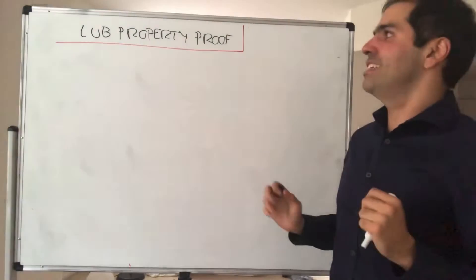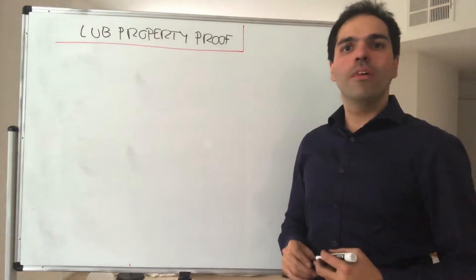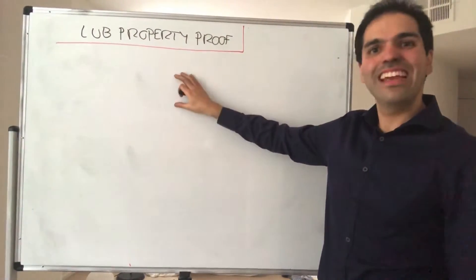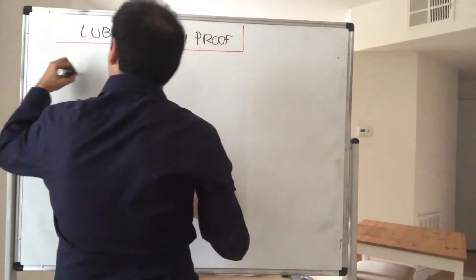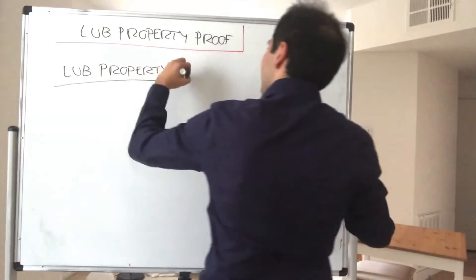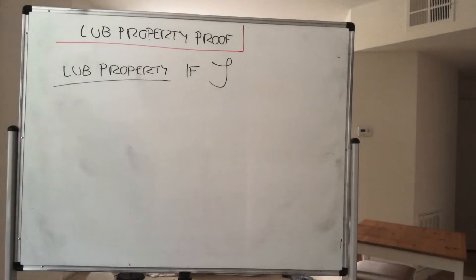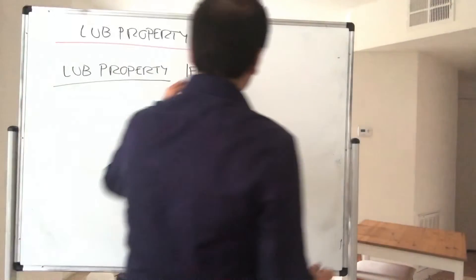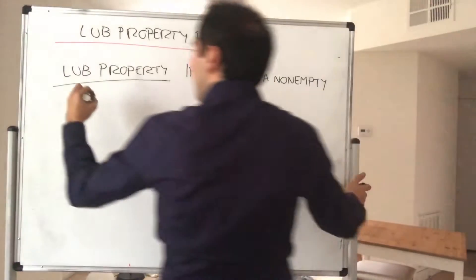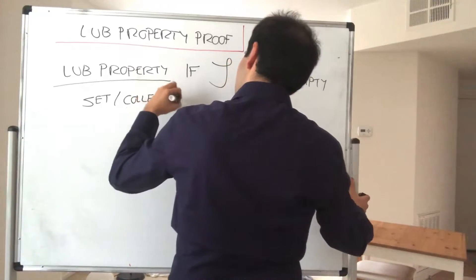What does the least upper bound property say? It says that if you have a set of real numbers that's bounded from above, then it has a least upper bound. So, the LUB property: if a set — let's call it zeta — is a non-empty set of cuts, that is, a non-empty collection of cuts, then it has a least upper bound.